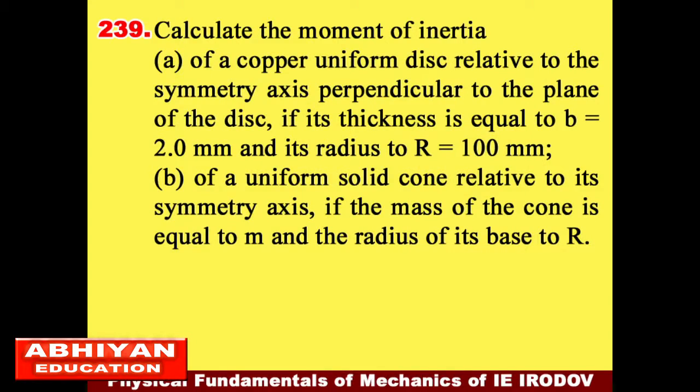Calculate the moment of inertia of a copper uniform disc relative to the symmetry axis perpendicular to the plane of the disc if the thickness is equal to 2 mm and its radius is equal to 100 mm.